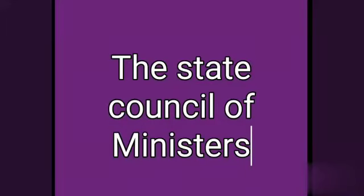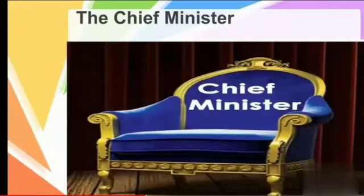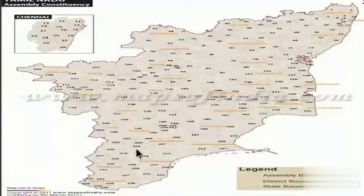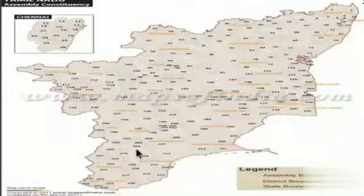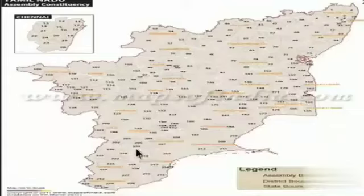The second topic is the State Council of Ministers. The leader of the majority party in the election is chosen as Chief Minister. In Tamil Nadu, there are 234 legislative constituencies. The party with more than 118 elected candidates is invited by the governor to form the government. Ministers for various departments — such as health and forestry — are headed by the Chief Minister.